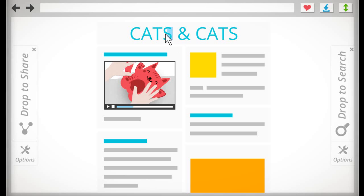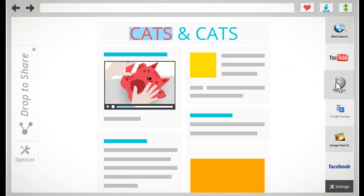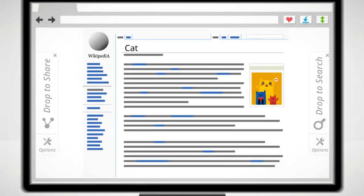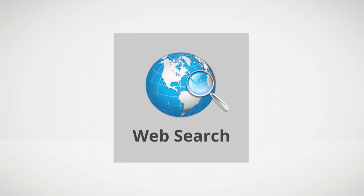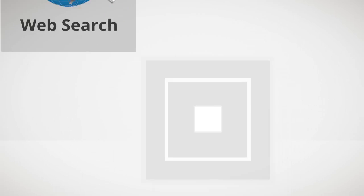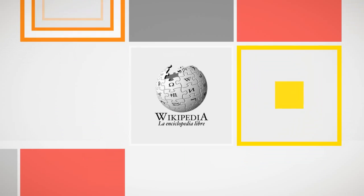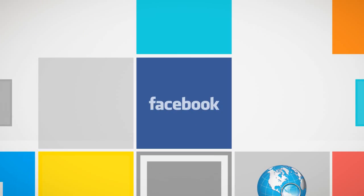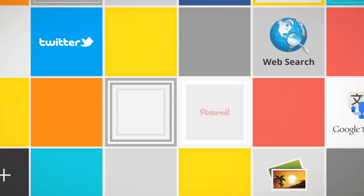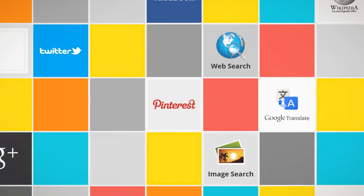In order to search or translate, just drag the item to the right panel. The tiles include Web Search, Translate, Image Lookup, Wikipedia, Facebook, Twitter, Pinterest, and more.